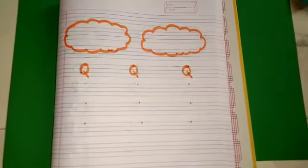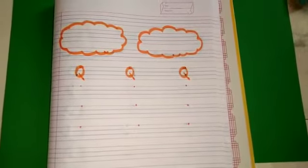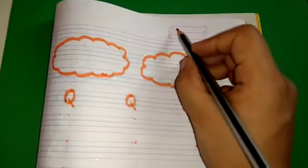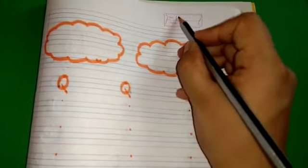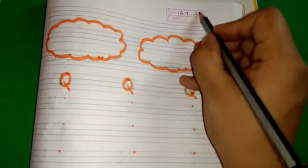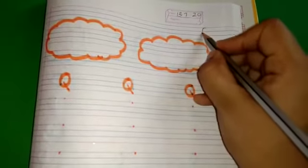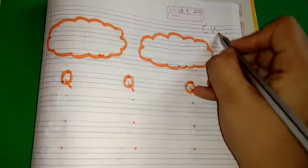Now, I request the parents to set the notebook of your child like this. First, write date here. Today's date is 13 July 2020. And write CW, that is classwork.